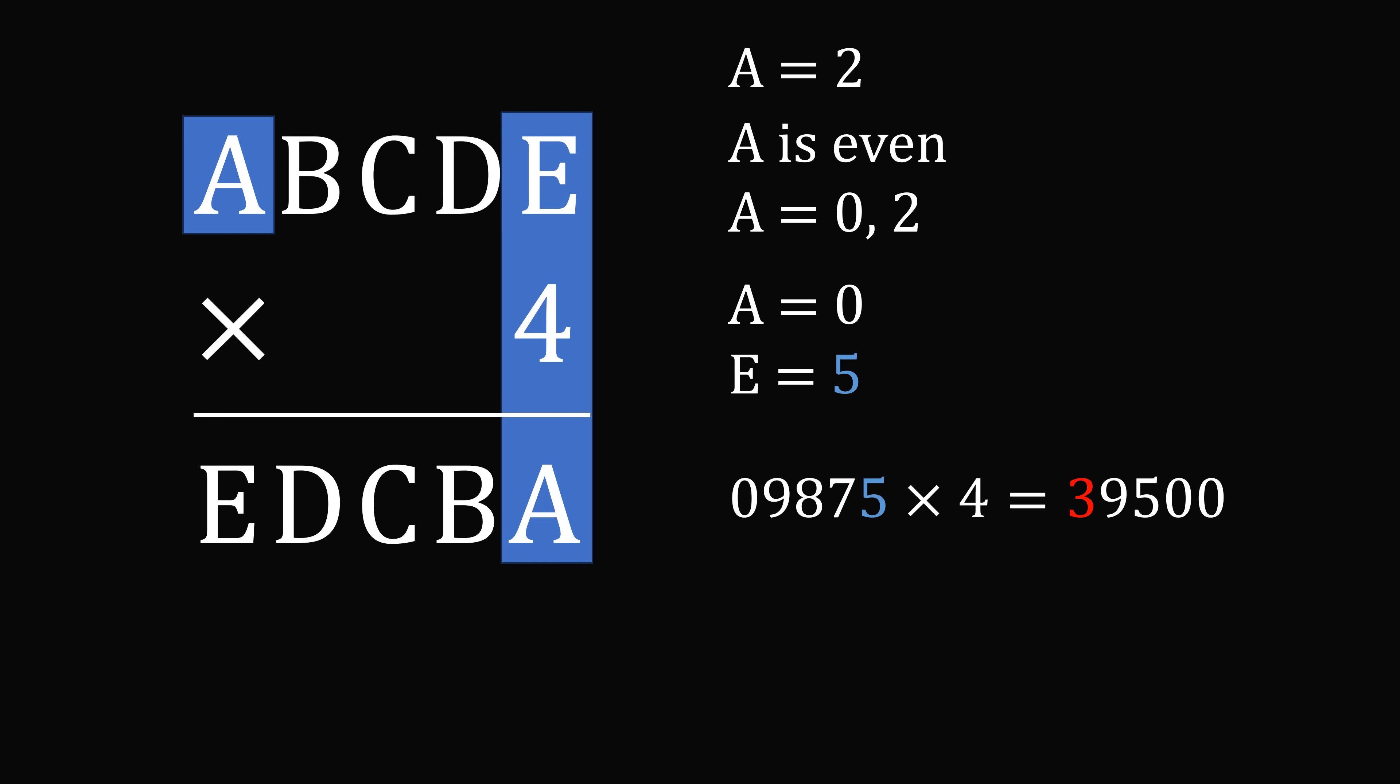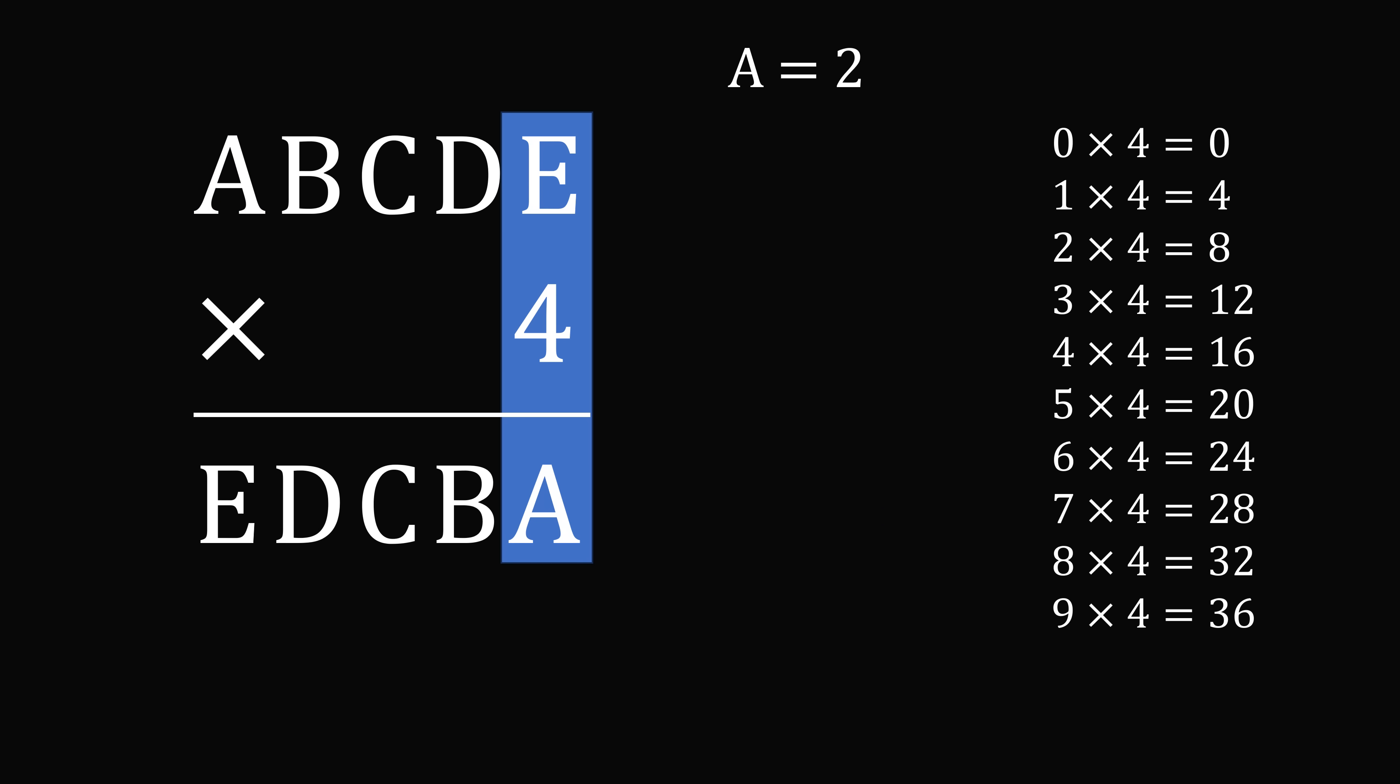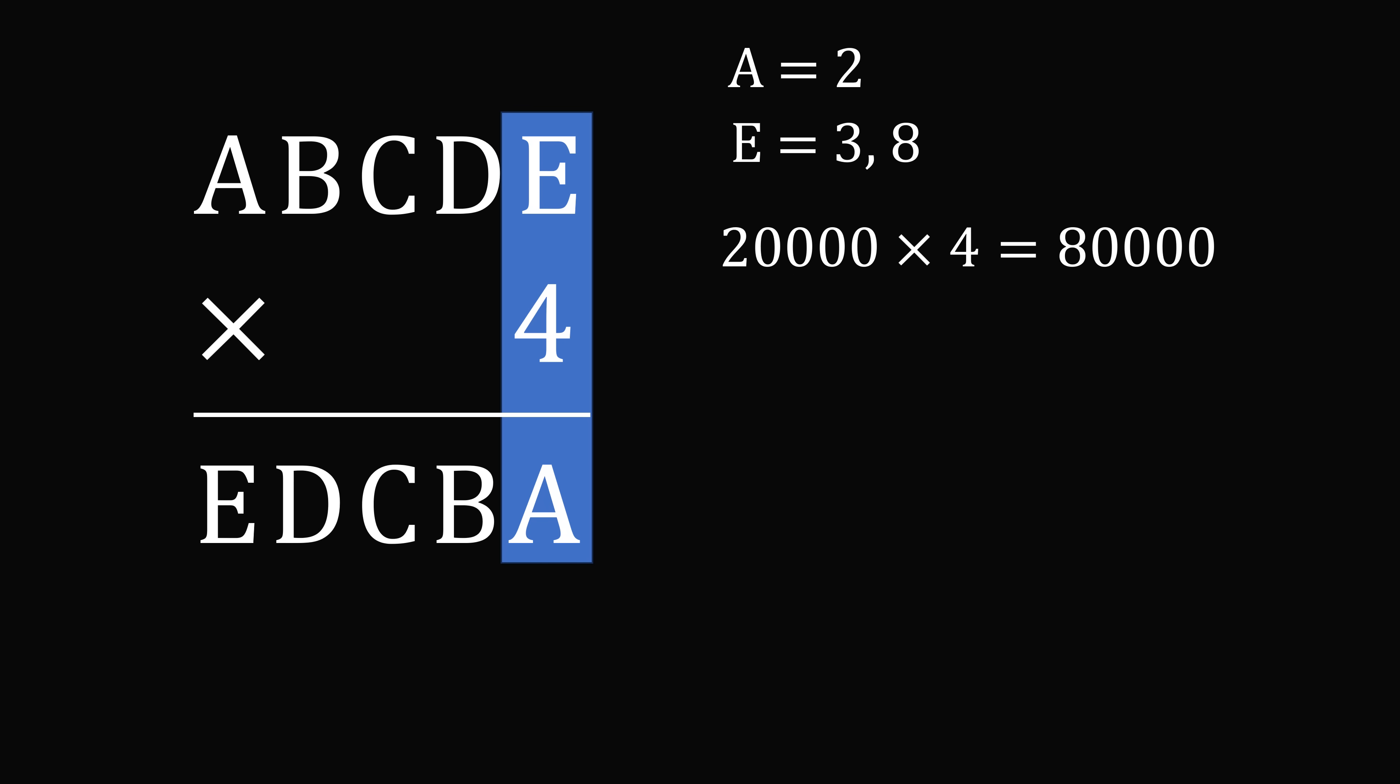And A is equal to 2. Now, let's look at the times table for 4 again. And we see that E times 4 is equal to something ending in 2. So this could be 12. That would mean that E is equal to 3. It could be 32. That would mean E is equal to 8. So E is equal to 3 or 8. But now, 20,000 multiplied by 4 is equal to 80,000. So we can't have E is equal to 3 because that would be too small. So we see that E has to be equal to 8.